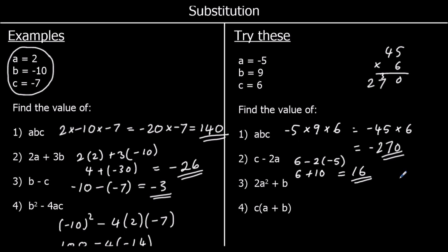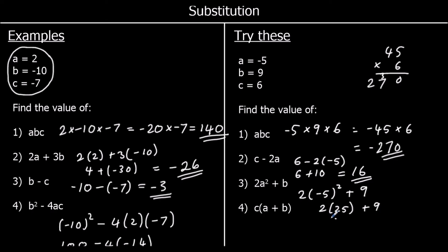Question 3: 2a squared plus b. So 2 times a squared — 2 times negative 5 squared — plus 9. Let's do negative 5 squared first: that's 25. So we've got 2 times 25 plus 9. 2 times 25 is 50, and 50 plus 9 is 59.